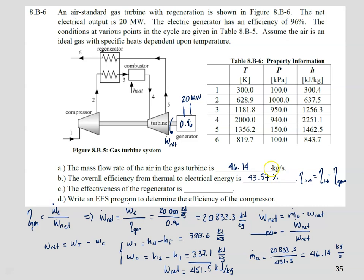Now we need to find the effectiveness of the regenerator. The effectiveness is q_actual divided by q_max. The actual heat transfer is h3 minus h2, and the maximum would be h5 minus h2 — if the cold stream exit temperature equaled the hot stream inlet temperature at state 5. Doing this analysis with the data, we find the effectiveness is 75 percent.